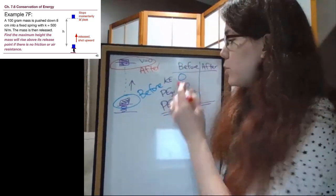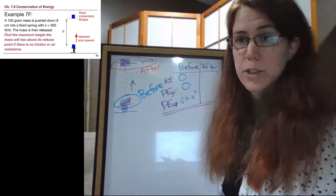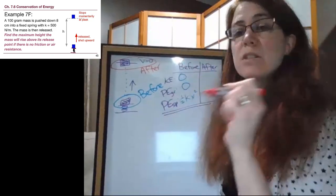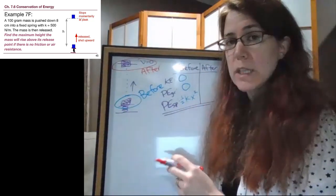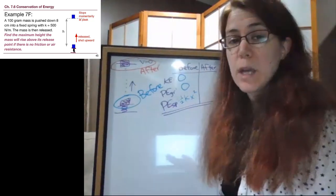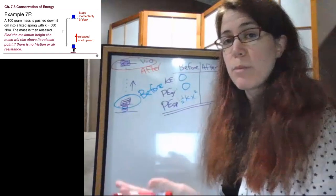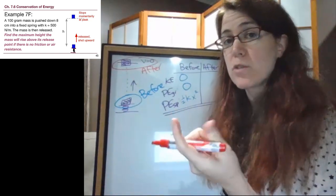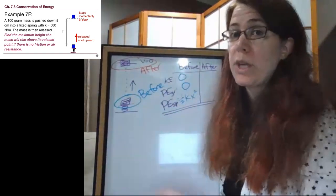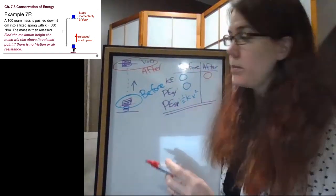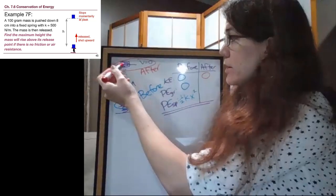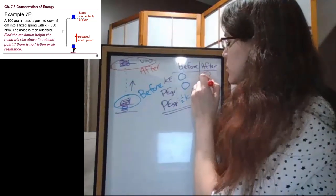For the after situation, we ask ourselves, do we have kinetic energy? And we are told that it stops. In the picture, we're told that it stops momentarily at the peak. In the example, we're asked to find the maximum height. And that phrase maximum height is one that we have been working with that we need to continue to understand. And so that kinetic energy is also zero. We ask ourselves, are we higher at the end of the problem? Absolutely. MGH.